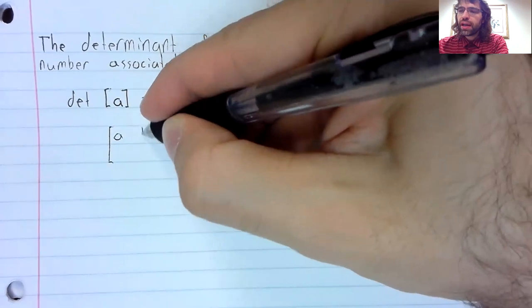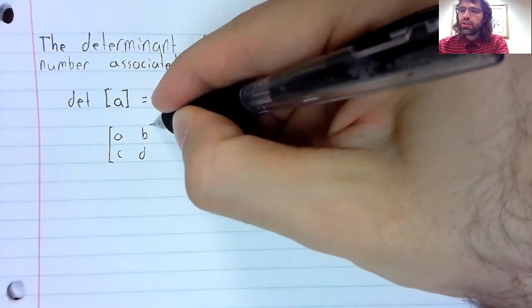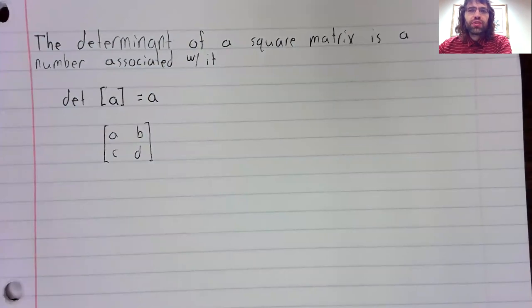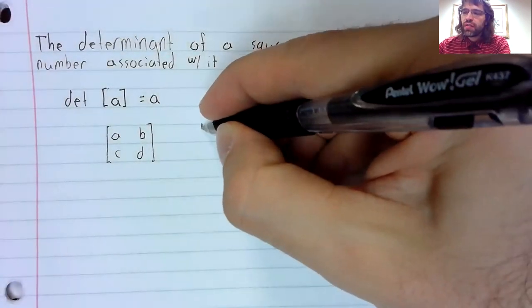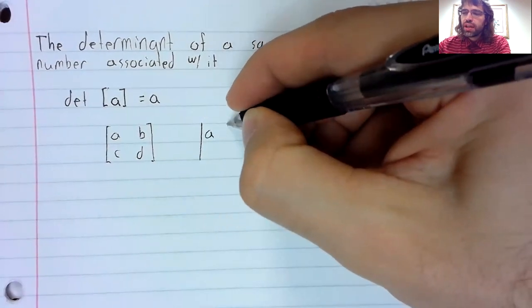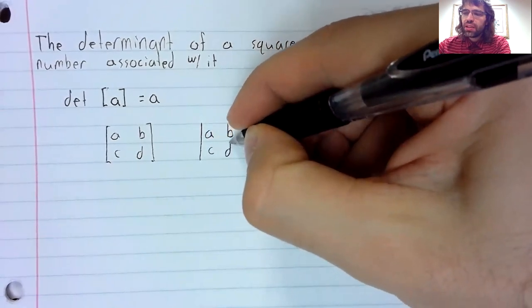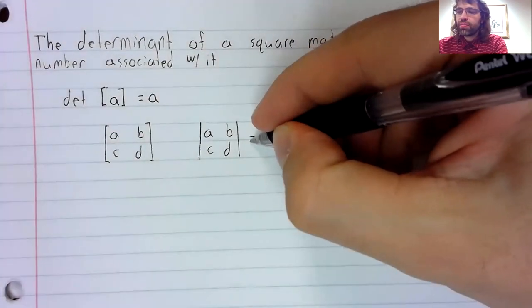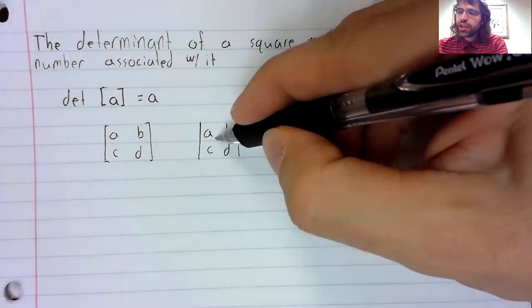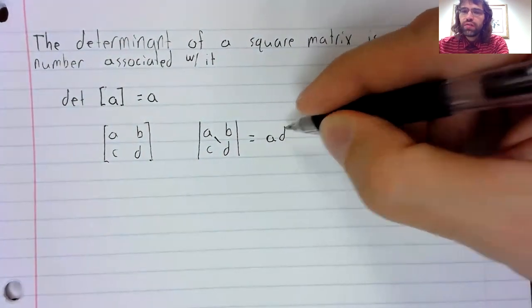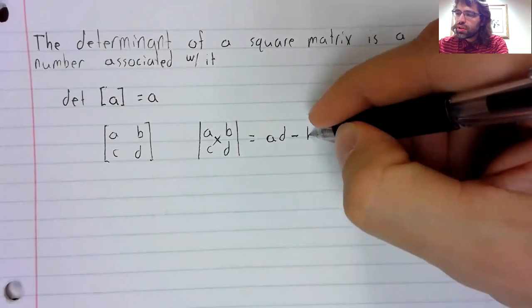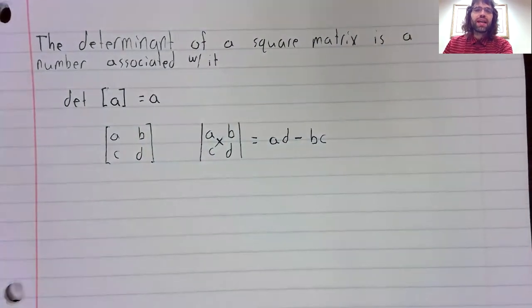Now, suppose you have a two-by-two matrix. And now that there's no risk that it will be confused with absolute value notation, let's introduce an alternative piece of notation. We can represent the determinant of a matrix by changing these brackets to vertical lines. The determinant of a two-by-two matrix is the product of the diagonal elements minus the product of the anti-diagonal elements.